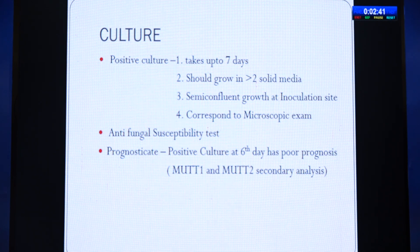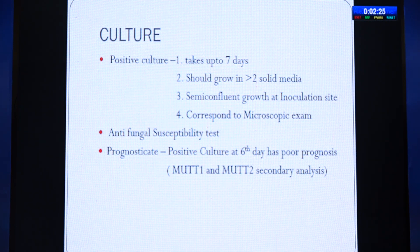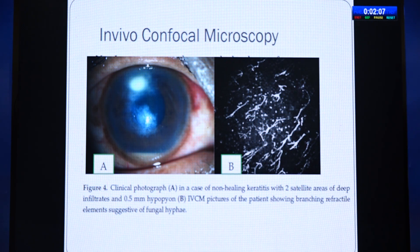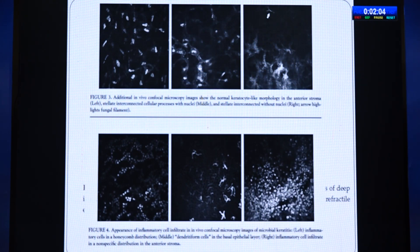Confocal microscopy is used when no organism is found on culture. It allows examination of different corneal layers to identify fungal hyphae — appearing as parallel hyperreflective areas. Two specific patterns in in-vivo confocal microscopy associated with fungal keratitis are reticulate pattern infiltration in the stroma and absence of stromal bullae. Sensitivity and specificity are 85-93%. Advantages: early diagnosis even in culture-negative cases, knowledge of depth, and assessment of drug efficacy. Disadvantages: painful contact procedure with high cost and limited availability.